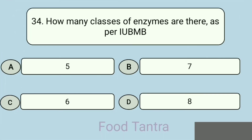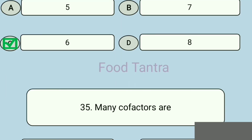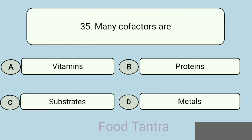Question 34: How many classes of enzymes are there as per IUBMB? Option A: 5. Option B: 7. Option C: 6. Option D: 8. Answer: 6. Question 35: Many cofactors are — Option A: Vitamins. Option B: Proteins. Option C: Substrates. Option D: Metals. Correct answer: Metals.